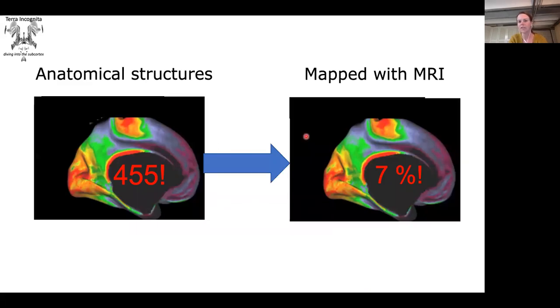So moving on to science then. For me, this whole adventure started many years ago when we decided, actually on a terrace here in Amsterdam, to count how many structures were actually named in the nomenclature of the anatomical federation in the subcortex. We found that of these 455 structures that we counted, a disappointing 7% was mapped in MRI atlases.